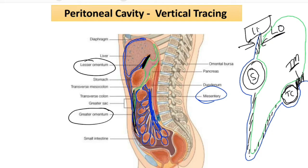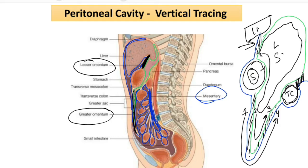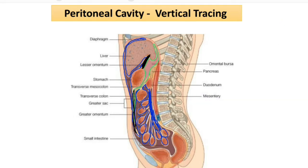We have four layers of the peritoneum here: the first layer is becoming the fourth layer and the second layer is becoming the third layer. You can appreciate this cavity behind the stomach — this is known as the lesser sac. Anterior to the stomach we have the greater sac.